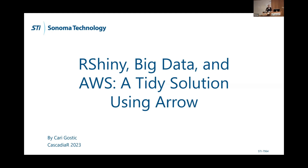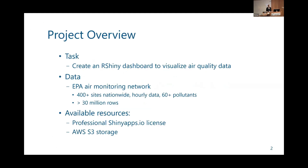Hi everyone, my name is Carrie. Today I'm here to tell you about how Apache's Arrow package can be used to link big data stored in AWS with an RShiny dashboard. I'm an air quality data scientist, so I work a lot in air quality. We were tasked with creating an RShiny dashboard to visualize this data, which came from an EPA monitoring network.